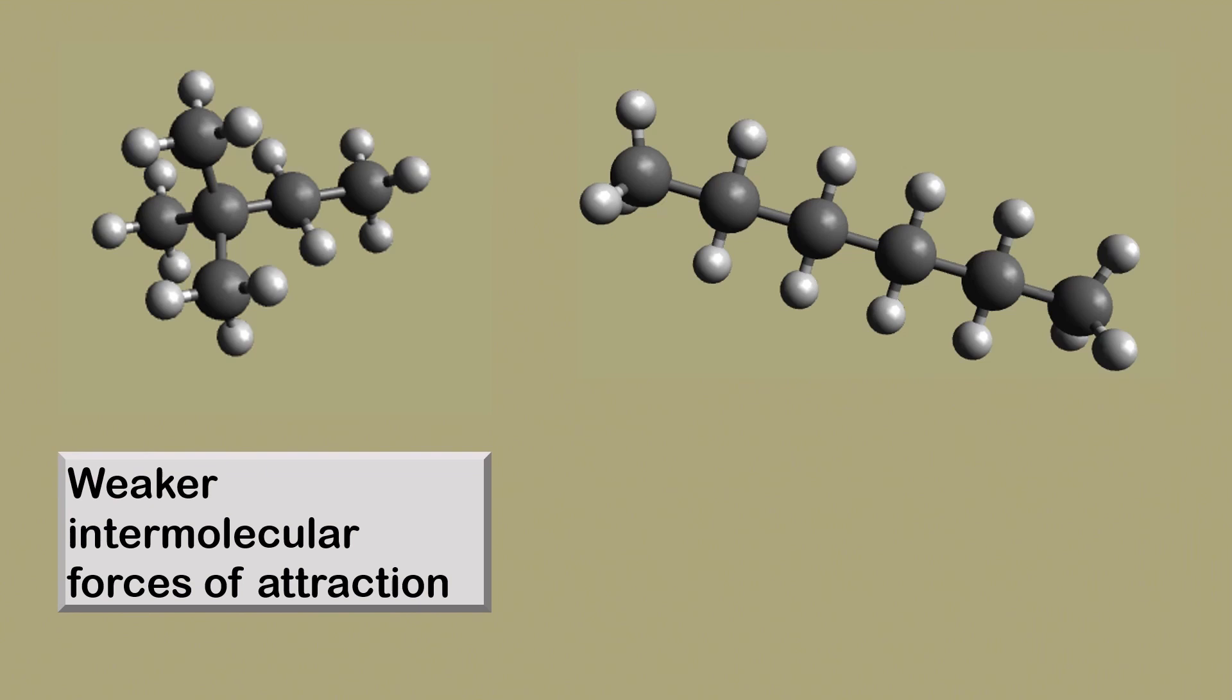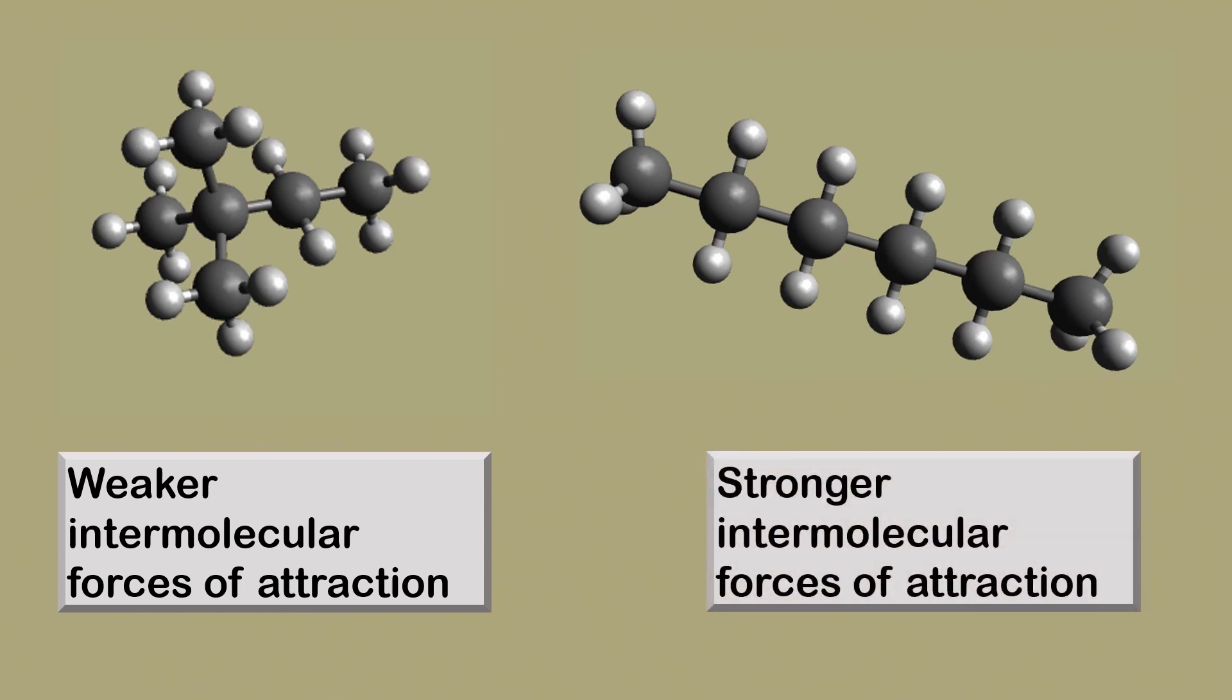This results in weaker intermolecular forces of attraction for the spherical or the branched isomer, while the straight isomer has stronger intermolecular forces of attraction, because the molecules have a larger surface area of contact.